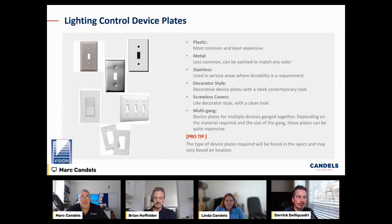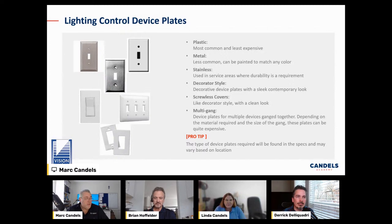Counting plates incorrectly throws off your estimate and what you'll buy later. A lot of people take that estimate cradle to grave and go buy exactly what's in it. So if you've got a lot of one-gang switch plates when they should have been two-gang, three-gang, or four-gang, you're buying the wrong bill of material. That's why it's really important, especially in EBM, to take them off correctly.